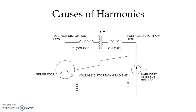From this figure we can see the voltage distortion gradient. On the source side, voltage distortion is very low. After the transformer, we have the load, and the harmonic current is generated from the load side and then propagates to the power system. So voltage distortion on the load side, because of current distortion being transformed into voltage distortion due to system impedance, results in very high voltage distortion on the load side.